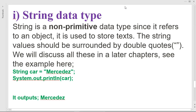The other type is String. String is the only non-primitive data type we'll discuss in today's tutorial. String refers to an object — it is used to store text. String values should be surrounded by double quotes. We'll discuss String in more detail in a later chapter as it is a topic by itself.